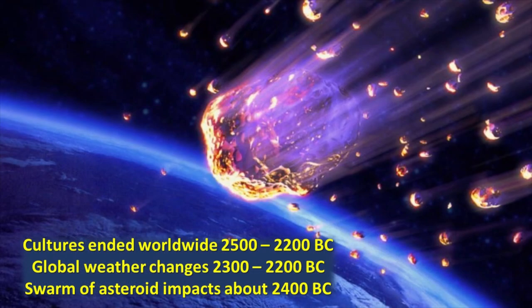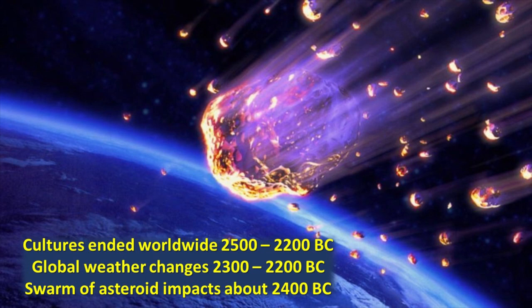Up to this point we have established three things. One, sometime in the period from 2500 to 2200 BC, archaeology shows that many civilizations worldwide were wiped out by a series of disasters. Two, independent evidence from climate studies shows global weather changes occurred starting around 2300 BC. Three, a swarm of asteroid debris formed impact craters whose origins cluster around 2400 BC. These impacts become the suspected cause of the rest.